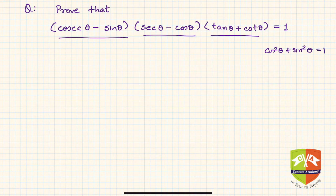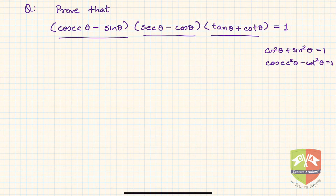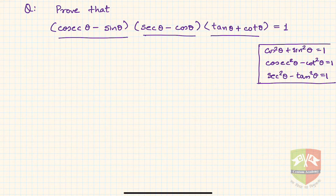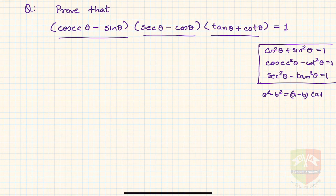The three basic fundamental relations we learned: first, cos squared theta plus sine squared theta equals one. Second, cosecant squared theta minus cot squared theta equals one. And third, secant squared theta minus tan squared theta equals one. These three trigonometric relations we must keep in mind.